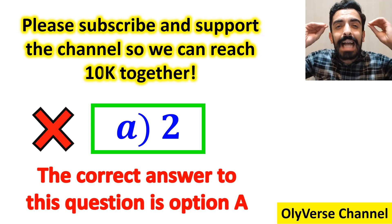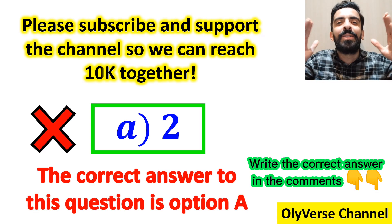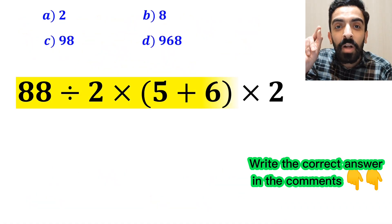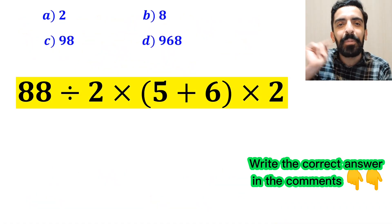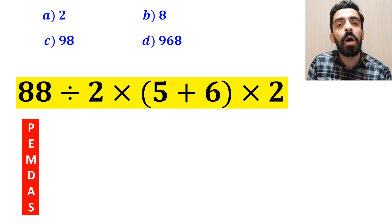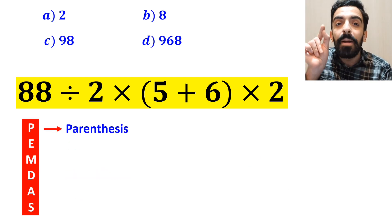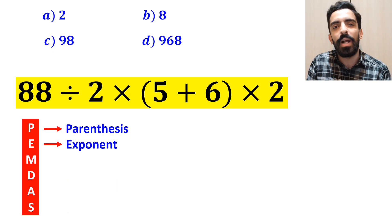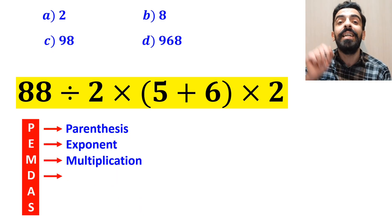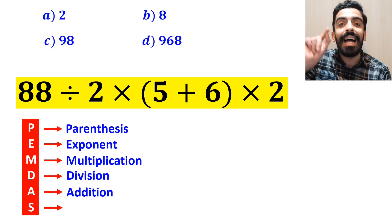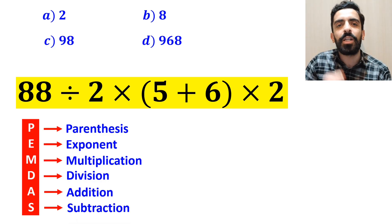However, this answer is absolutely wrong. Now let me explain how to solve this expression properly. To solve this question we must follow a rule called PEMDAS. P stands for parenthesis, E stands for exponent, M stands for multiplication, D stands for division, A stands for addition, and S stands for subtraction.